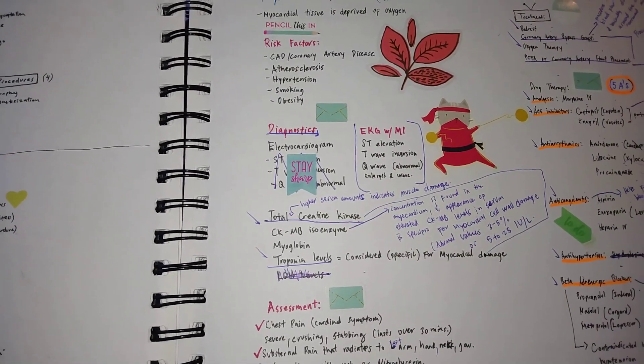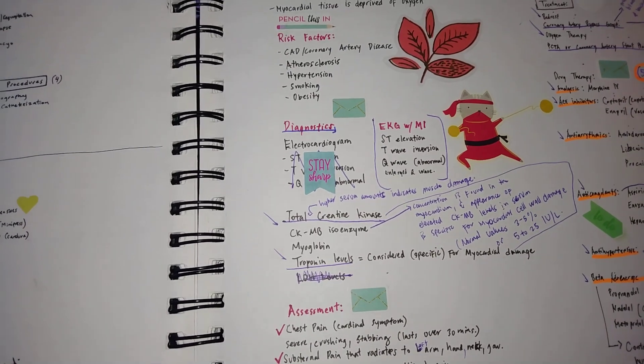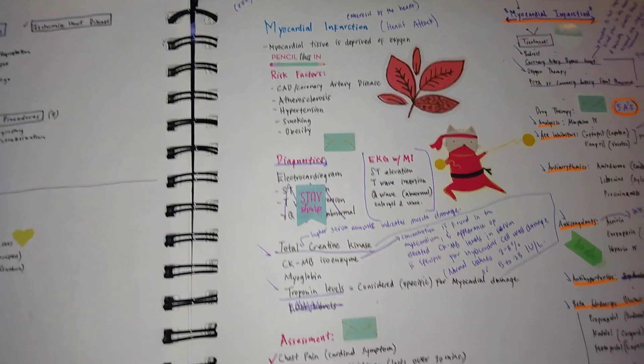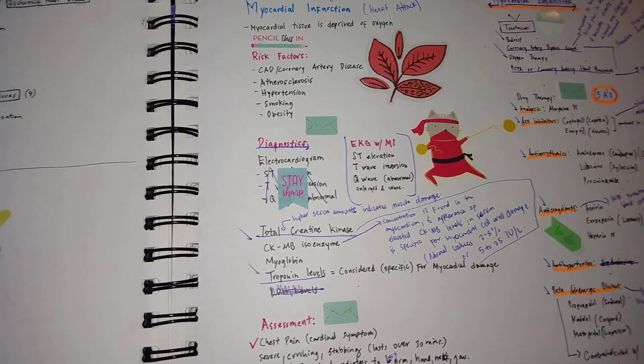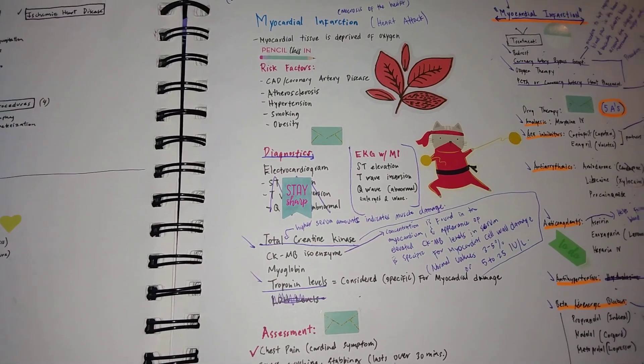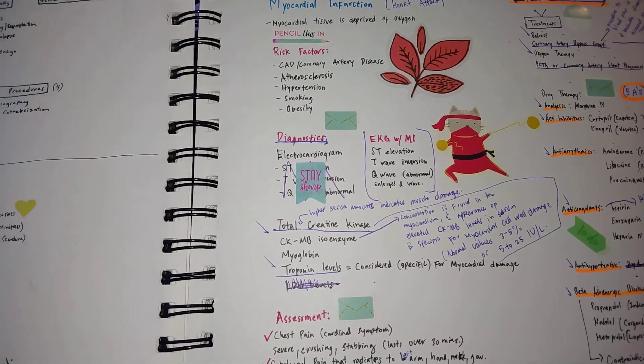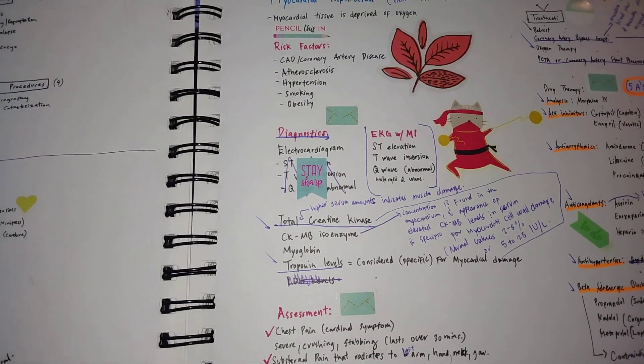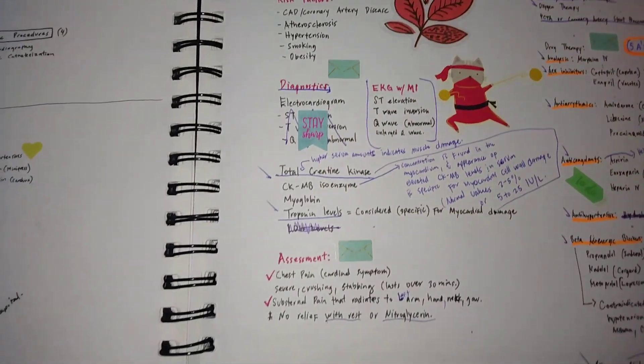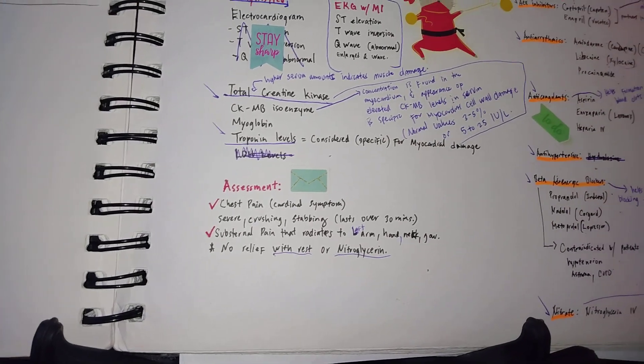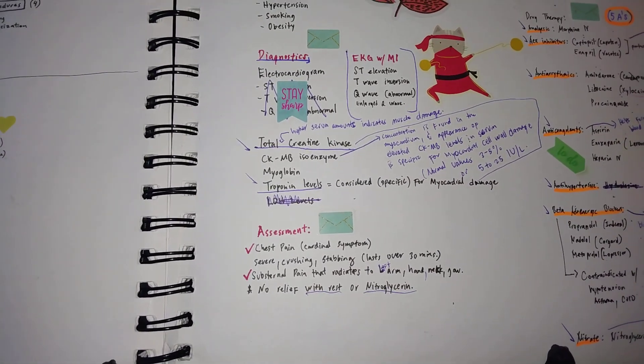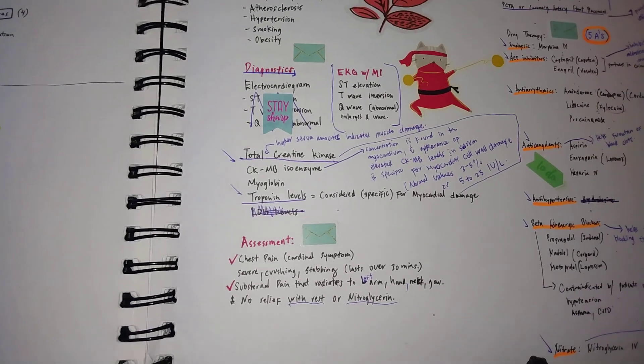Now my intent for this review was I was just going to briefly go over heart attack or myocardial infarction, which we all know is basically necrosis of the heart in which the myocardial tissue is deprived of oxygen. When we look at the risk factors, we're looking at CAD or coronary artery disease, atherosclerosis, hypertension, smoking, and obesity.